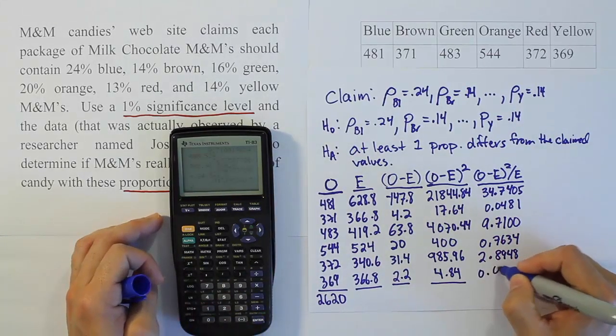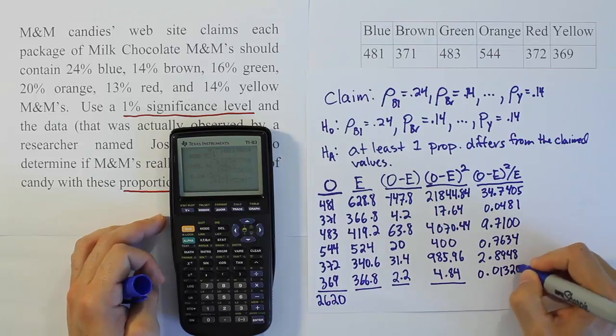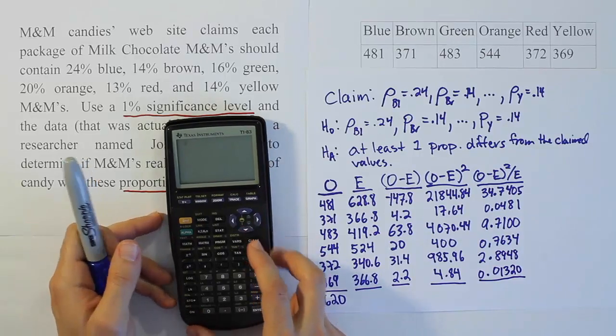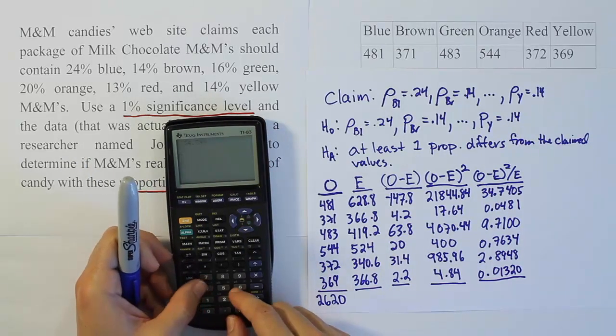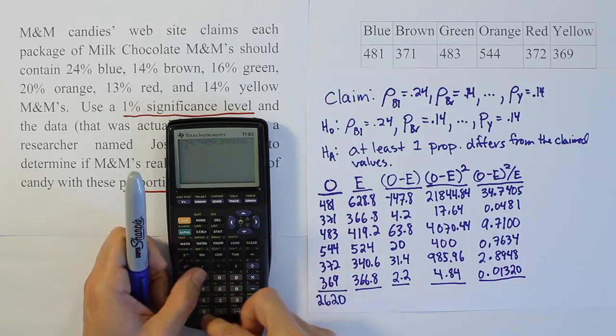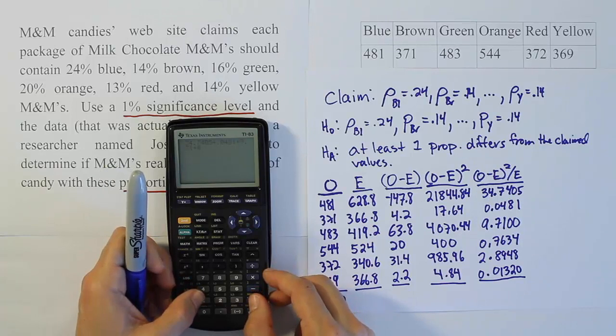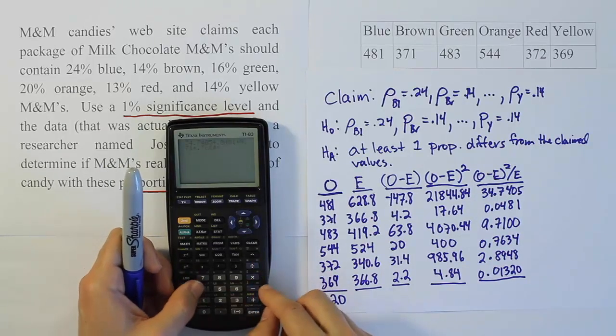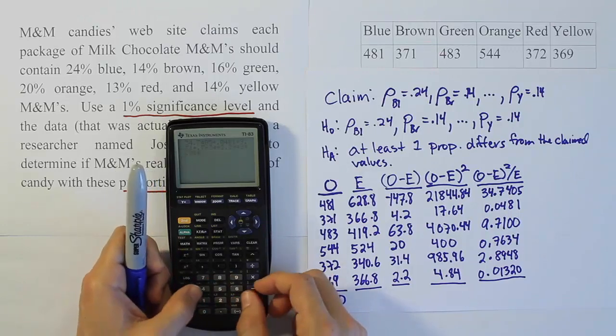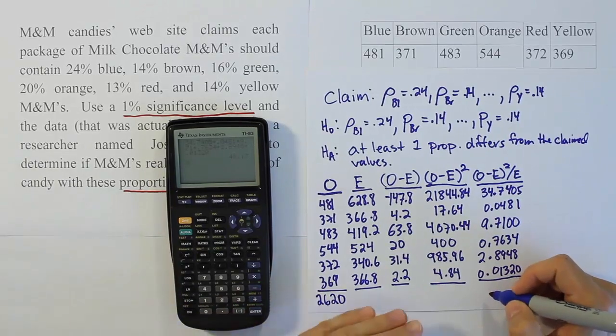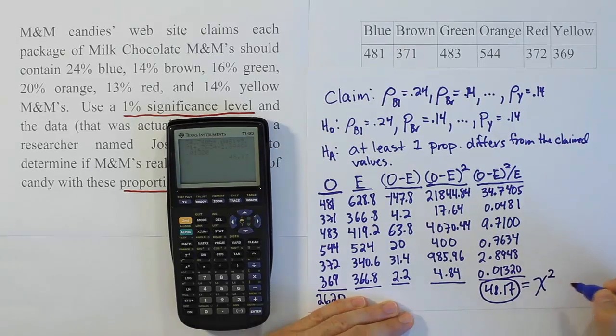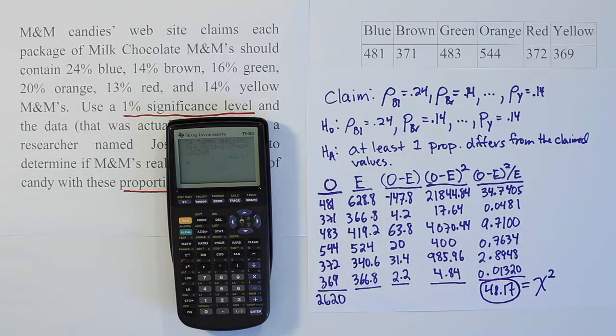Let's add this up. 34.7405 plus 0.0481 plus 9.71 plus 0.7634 plus 2.8948 plus 0.0132 gives 48.17. This is our chi-squared test statistic. Now let's talk about the critical value.